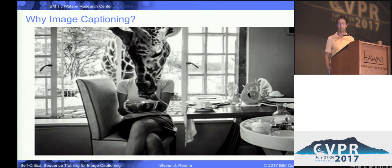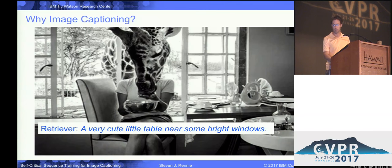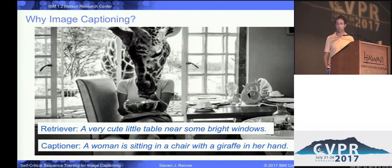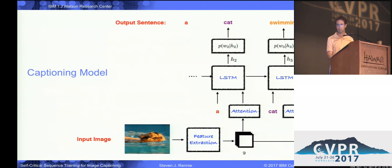Why image captioning? I think it's just a great problem. As others today have discussed, the challenge is to be able to compose — with respect to objects, attributes, and relationships between them — and express those compositions in natural language. Nearest neighbor search does not work; the space of images is just too vast. We want generative models that really can compose, and if you can robustly compose a description of images in the wild, you really do understand something deeper about the world.